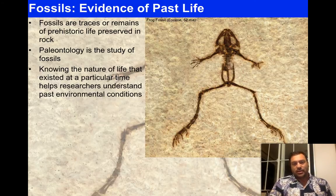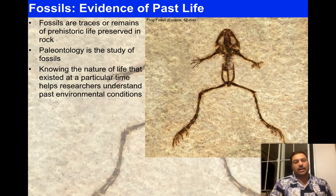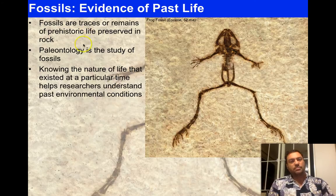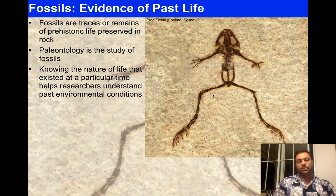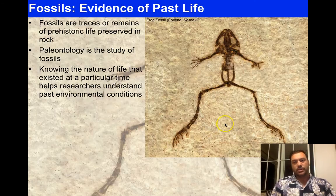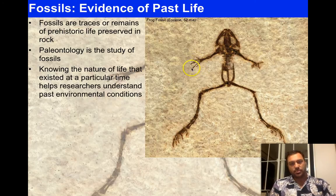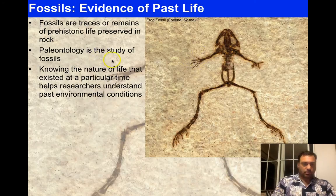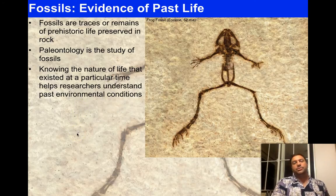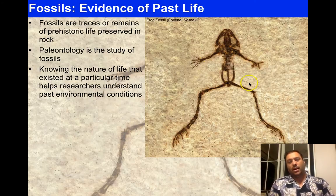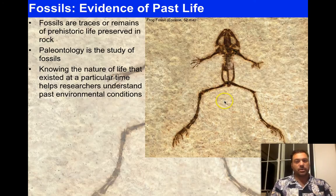Evidence of past life is usually within the rocks, and if we know something about that evidence we can use it to date rocks. Fossils are traces or remains of prehistoric life preserved in rocks. Here's a fossil frog that's 52 million years old — you can tell quite quickly it's a frog, very similar to what we see today. The science of studying fossils and interpreting what creatures looked like and how they lived is paleontology. Knowing the nature of life at a particular time helps researchers understand past environmental conditions.